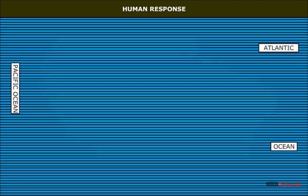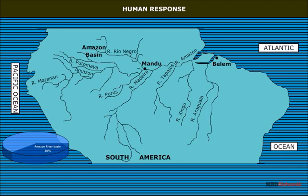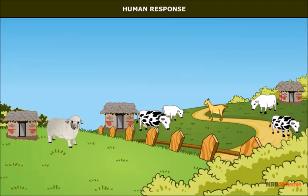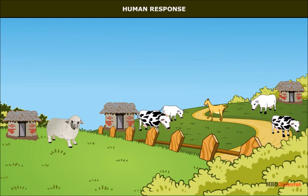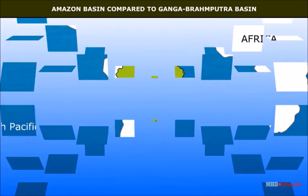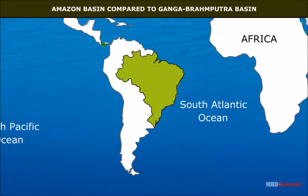The Amazon river basin comprises nearly 40 percent of the continent of South America. In the forest region, tribals still engage in food gathering and hunting. In the grasslands, they rear animals like cattle, sheep and goats.